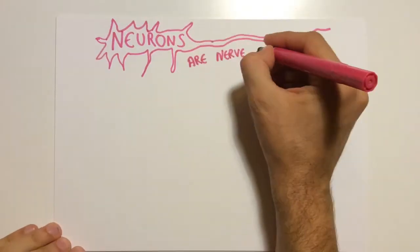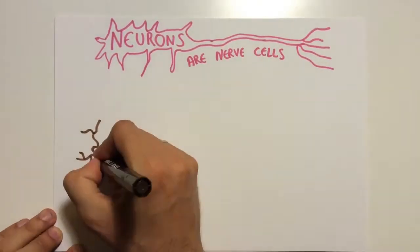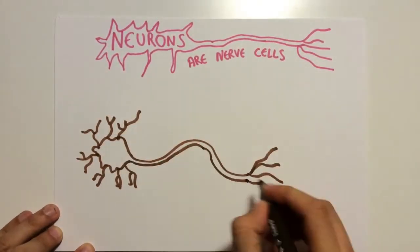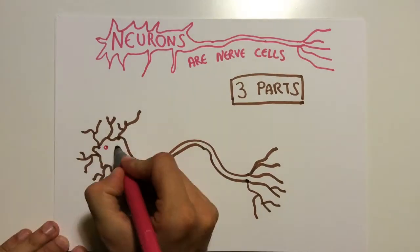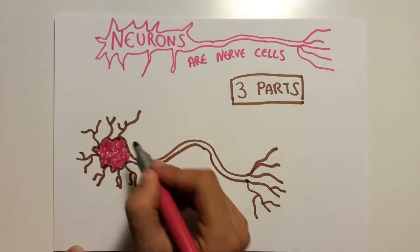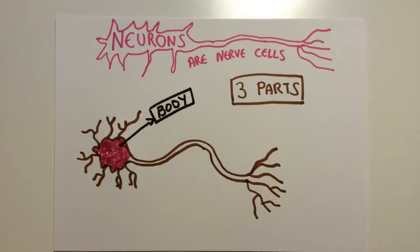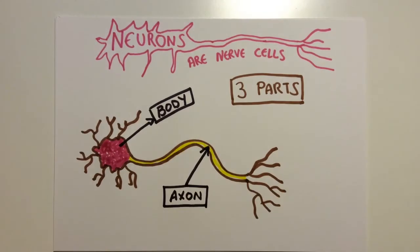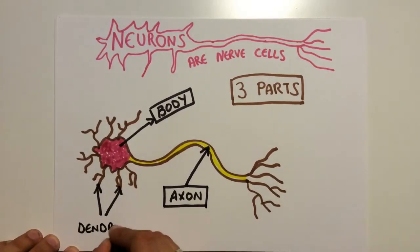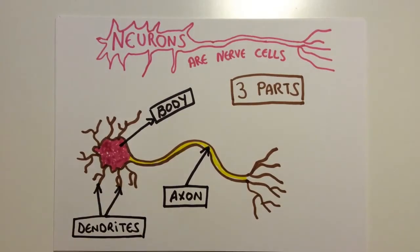Neurons are nerve cells that have three parts: the body, which is the widest part of the neuron; the axon, which transmits messages along the neuron; and the dendrites, which receive messages from the sense organs or other neurons.